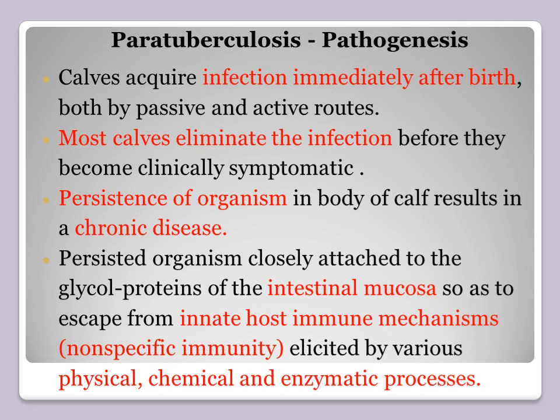Pathogenesis: cows acquire infection immediately after birth by passive and active routes. Most cows eliminate the infection before they become clinically symptomatic. Persistence of the organism in the body of the calf results in a chronic disease. The persisted organism closely attaches to the glycoprotein of the intestinal mucosa so as to escape from the innate host immune mechanism — the non-specific immunity — elicited by various physical, chemical, and enzymatic processes.